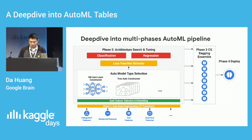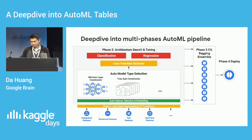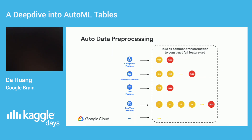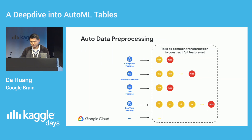The pipeline is composed of four phases: auto data processing, architecture search and tuning, cross-validation bagging, and ensemble — also including a deployment phase. For auto data pre-processing, we did a lot of research and consolidated all useful feature transformations into the system. For each feature, we do many transformations, eventually composing a full feature set — a feature pool — that is many times as large as the original feature set. We also create additional signals indicating whether a specific feature is missing.